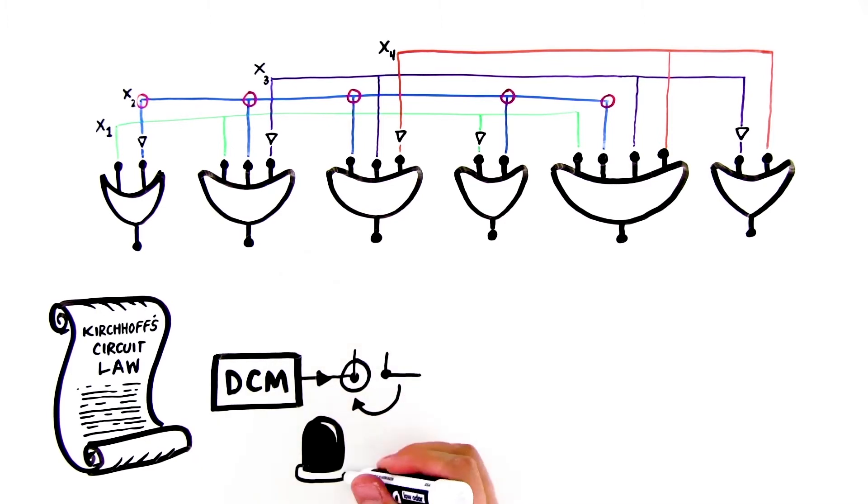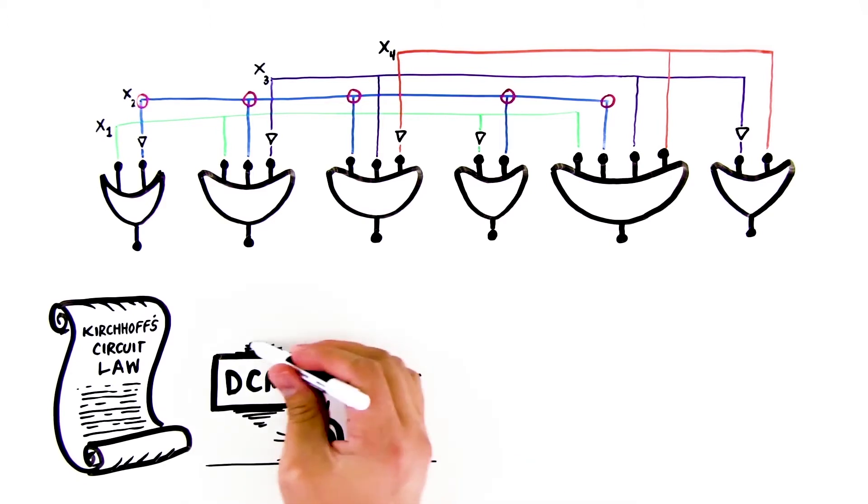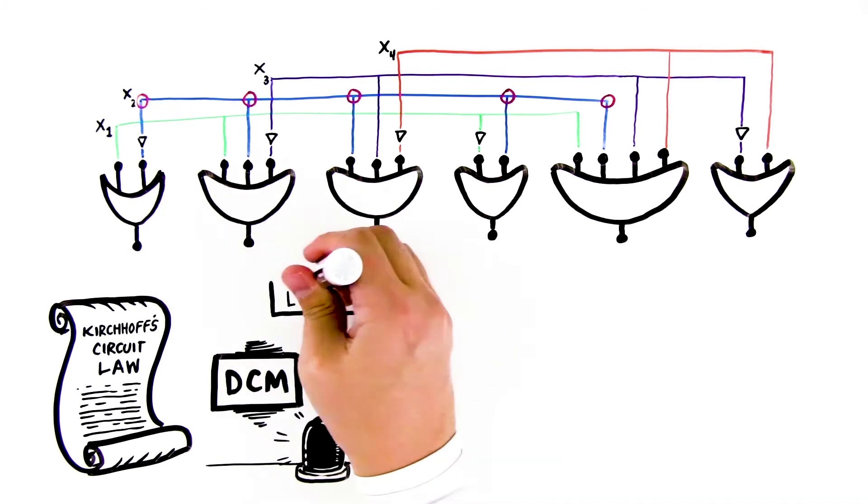This creates a feedback mechanism of chain reactions, where the DCMs send a signal in response to each signal they receive. All of this is happening at close to the speed of light.